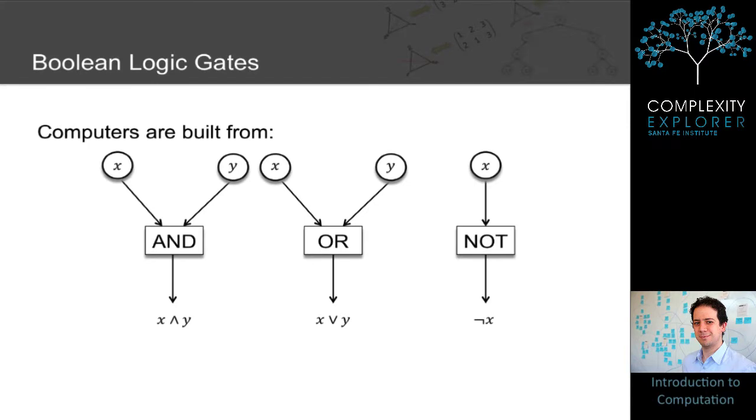For the purposes of understanding this phenomenon, computers are built from three basic Boolean logic gates called AND, OR, and NOT. The AND gate takes two inputs, X and Y, and outputs X ∧ Y, denoted with this upside-down V. The output is true exactly when both of the inputs are true, when X and Y are true.